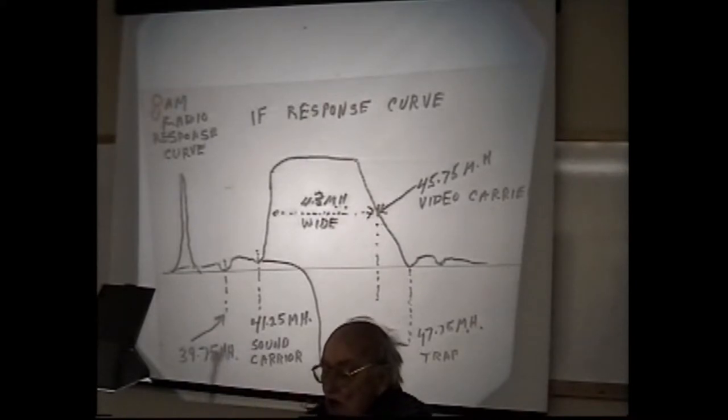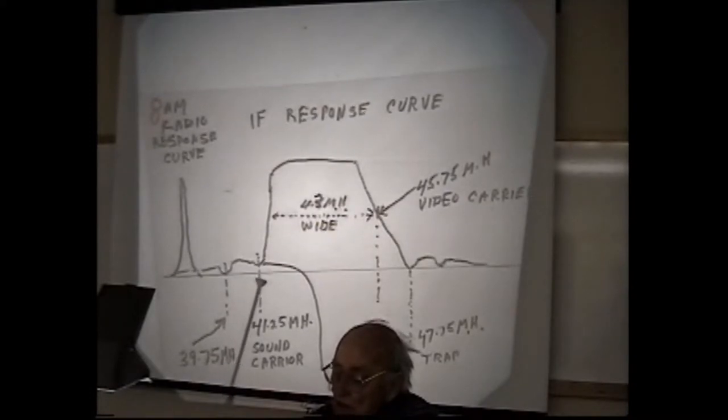And they have in here a trap tuned to the frequency of the sound carrier, 41.25, and that reduces the sound down to 10%. It's a special coil. It'll be difficult to make it because the spacing of this trap is very, has to be very accurate. Otherwise, it'll cut it down to 2% or 15% or something. Over here, we have adjacent channel traps.